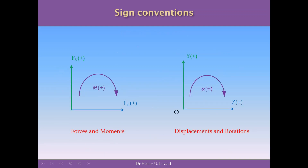It is very important to define sign conventions to avoid ambiguities and write proper mathematical equations. We define two conventions: one for forces and moments, and one for displacements and rotations. A force or displacement going to the right is positive; going left is negative. A force or displacement going up is positive; going down is negative. A moment or rotation that is clockwise is positive; counter-clockwise is negative.